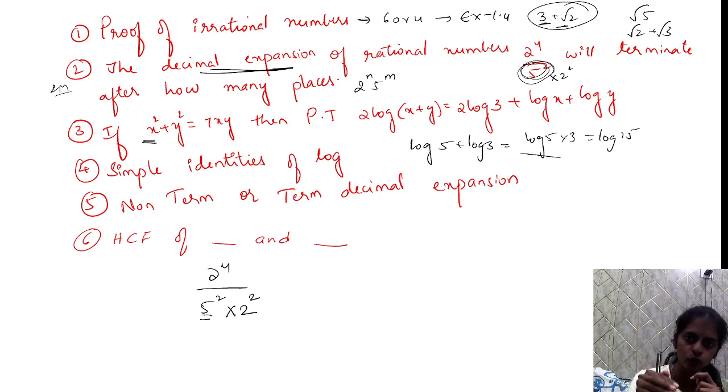Suppose in the question, 2 is at a different power. We have to find the same power. 2 power 4 divided by 5 into 2 whole squared. So 2 power 4 by 10 squared.